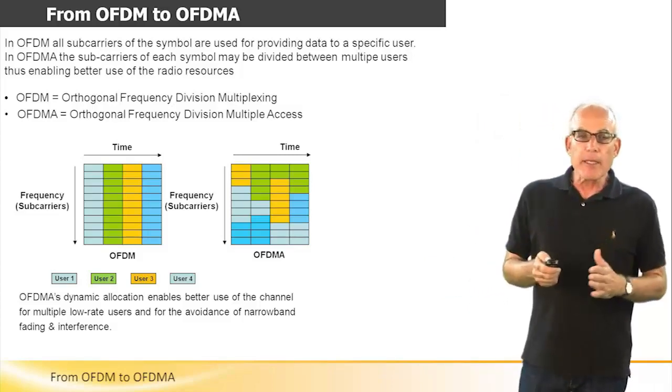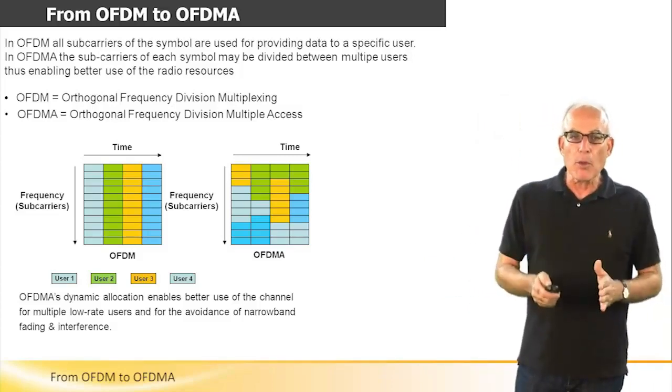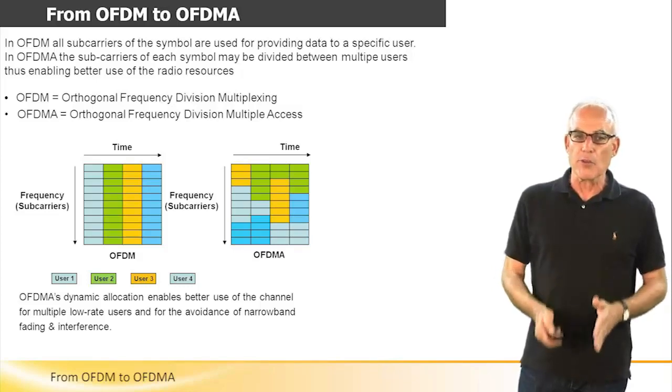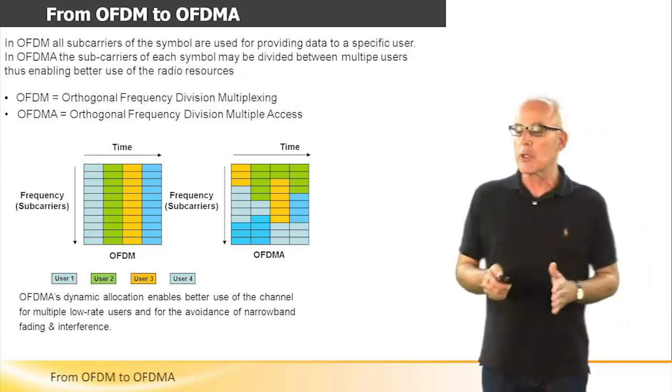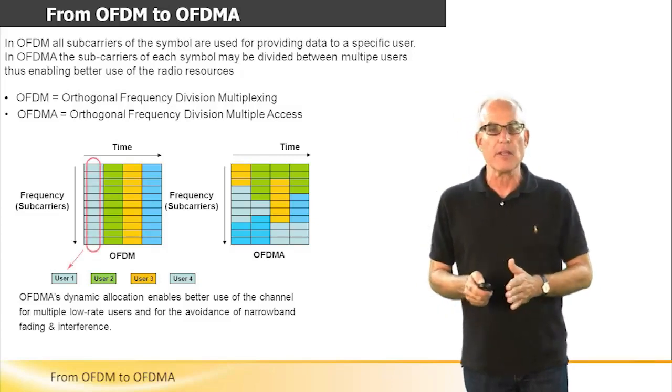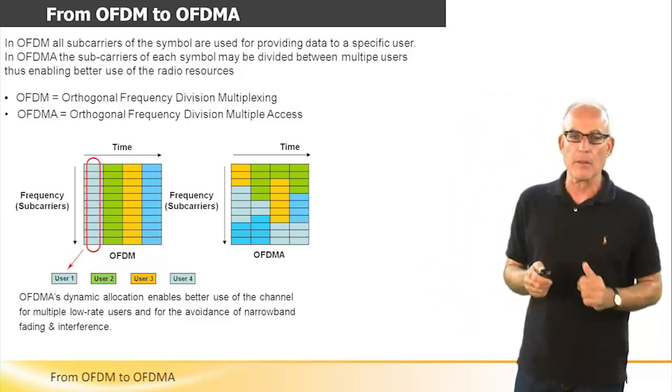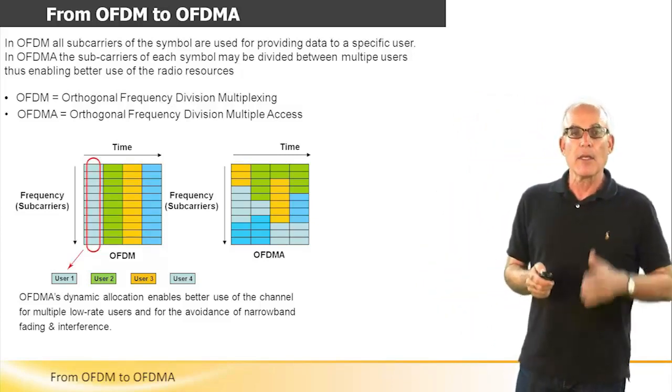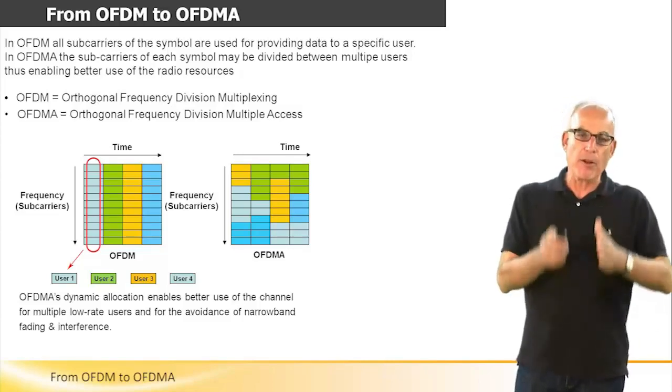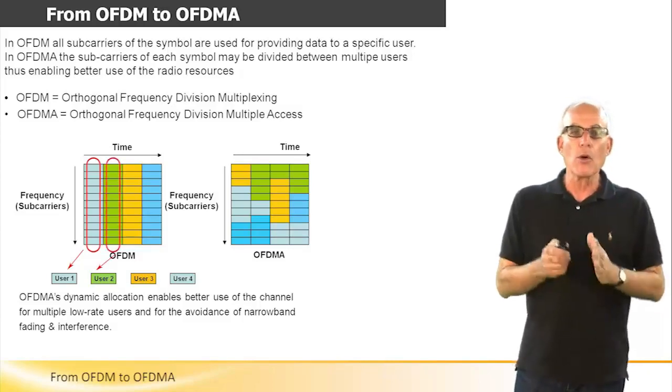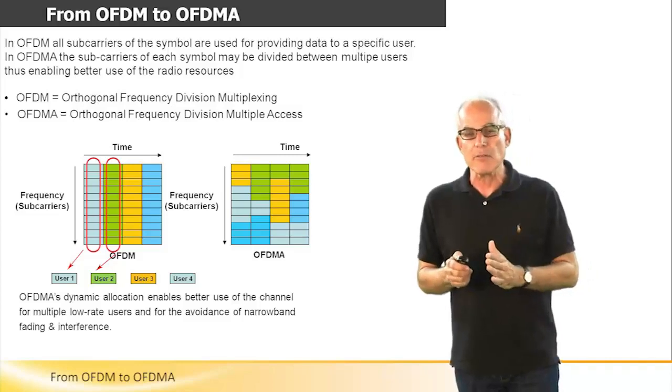In OFDM, in each symbol, all frequency resources, all subcarriers are actually allocated for a single user, as can be seen at this slide. At each time frame, at each symbol, only one user can be served.